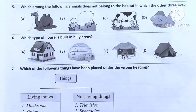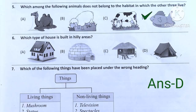Question number 5. Which among the following animals does not belong to the habitat in which the other three live? Option A: Camel. Option B: Sheep. Option C: Cow. Option D: Fish. Options A, B, and C live on land, but Option D lives in water. So the answer will be Option D.